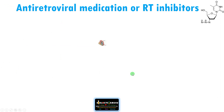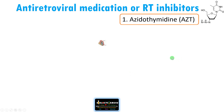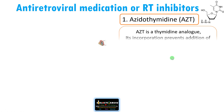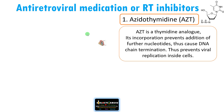Now let us see the antiretroviral medications, or reverse transcriptase inhibitors, that are commonly used to treat HIV and other retroviral diseases. The first one is Azidothymidine. It is a thymidine analog. Its incorporation prevents the addition of further nucleotides, thus causing chain termination and preventing viral replication inside the cell.